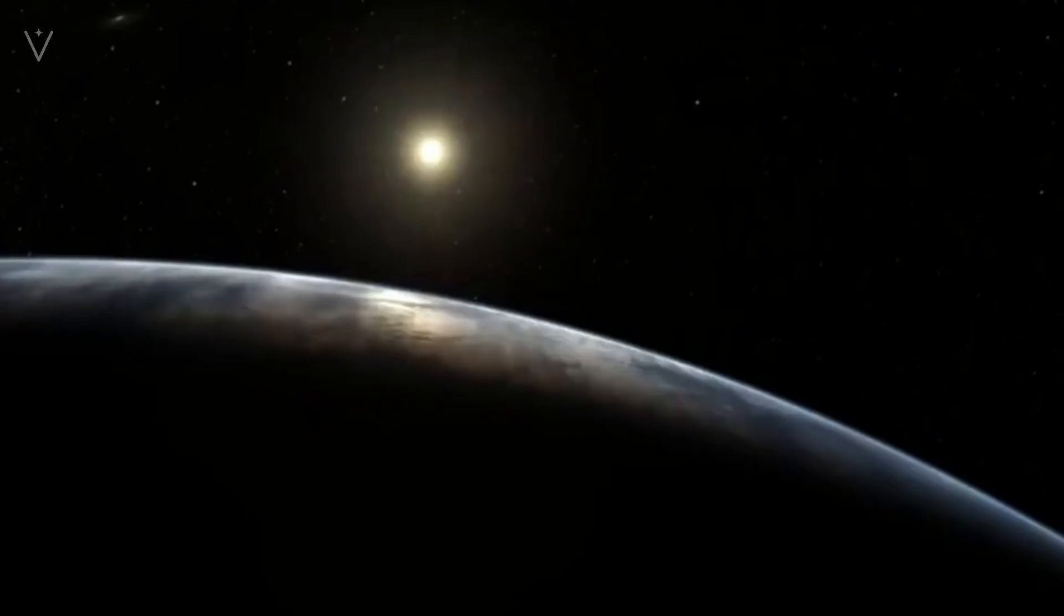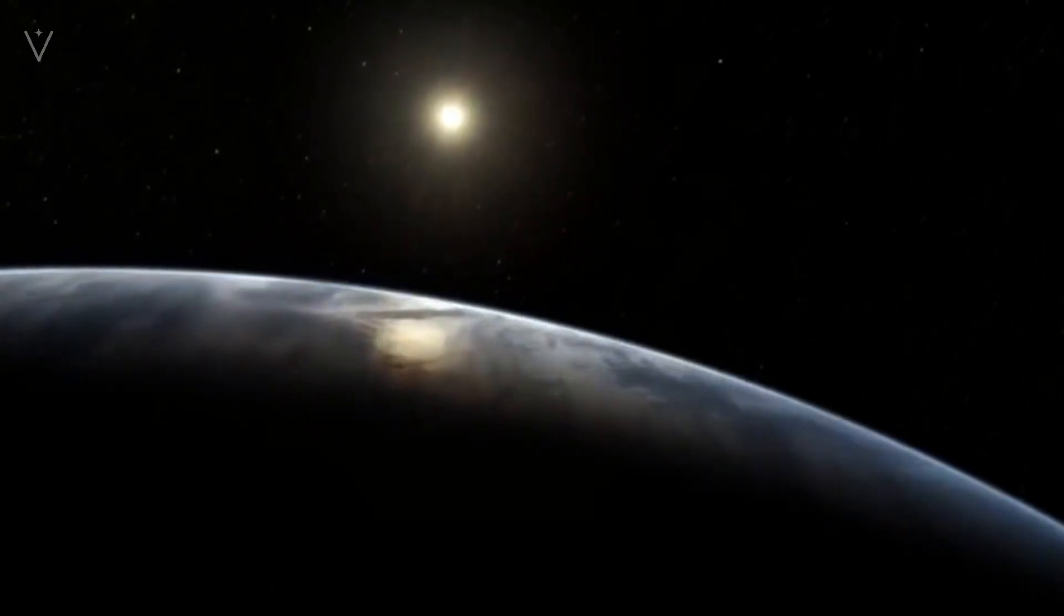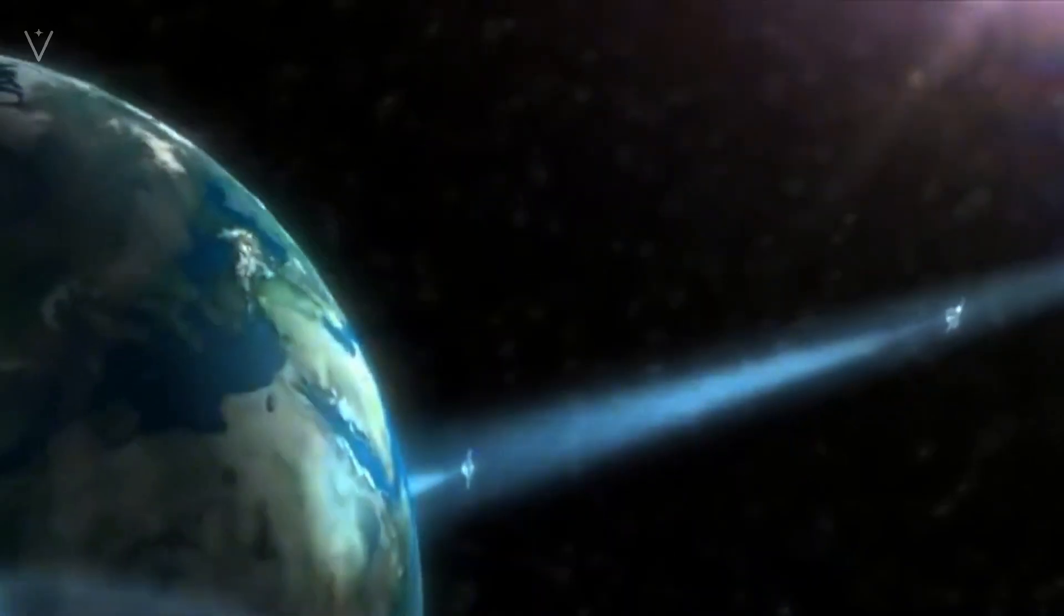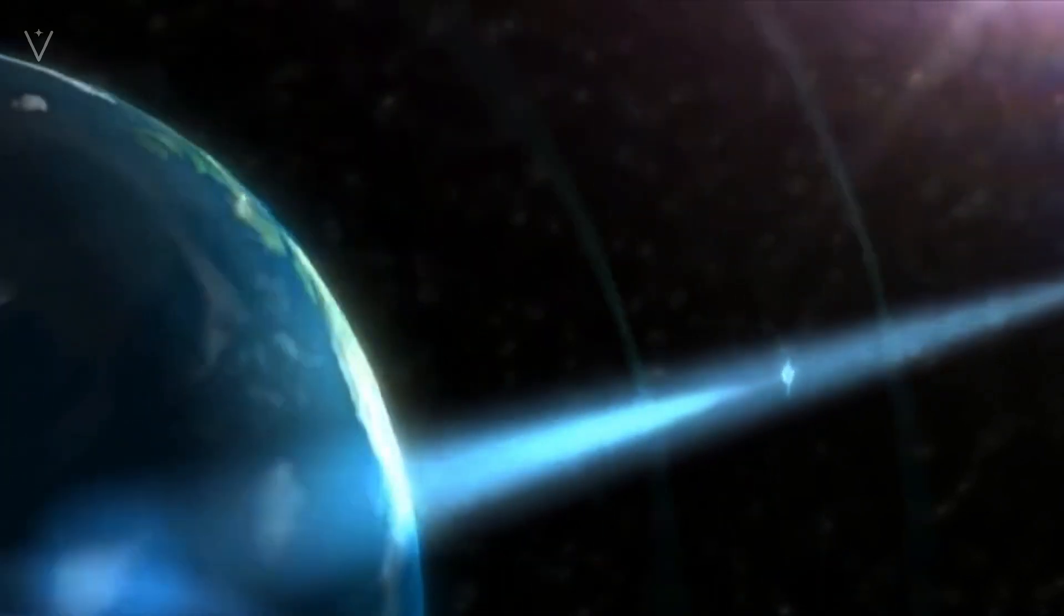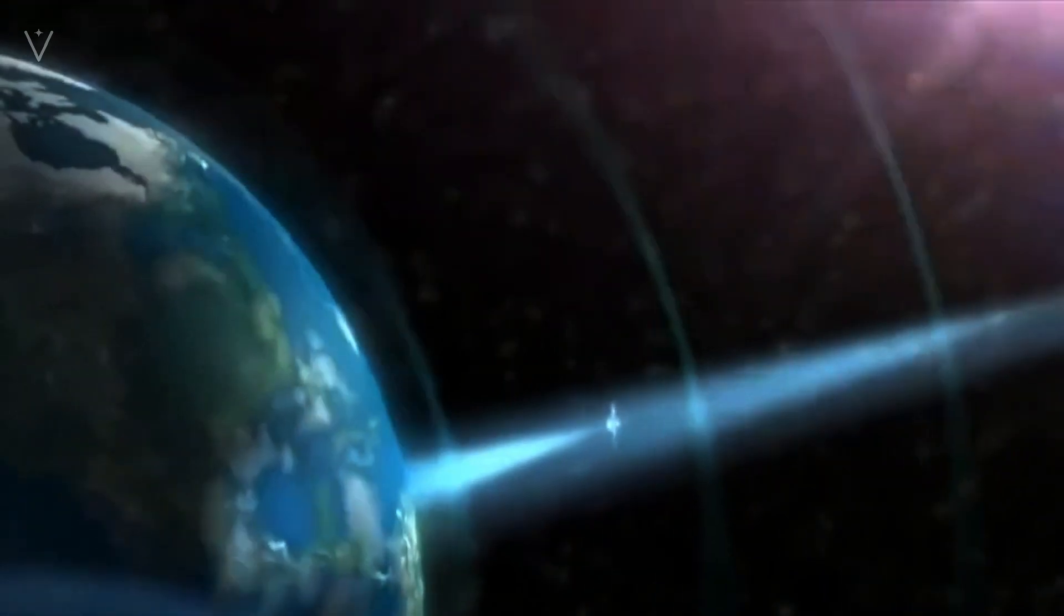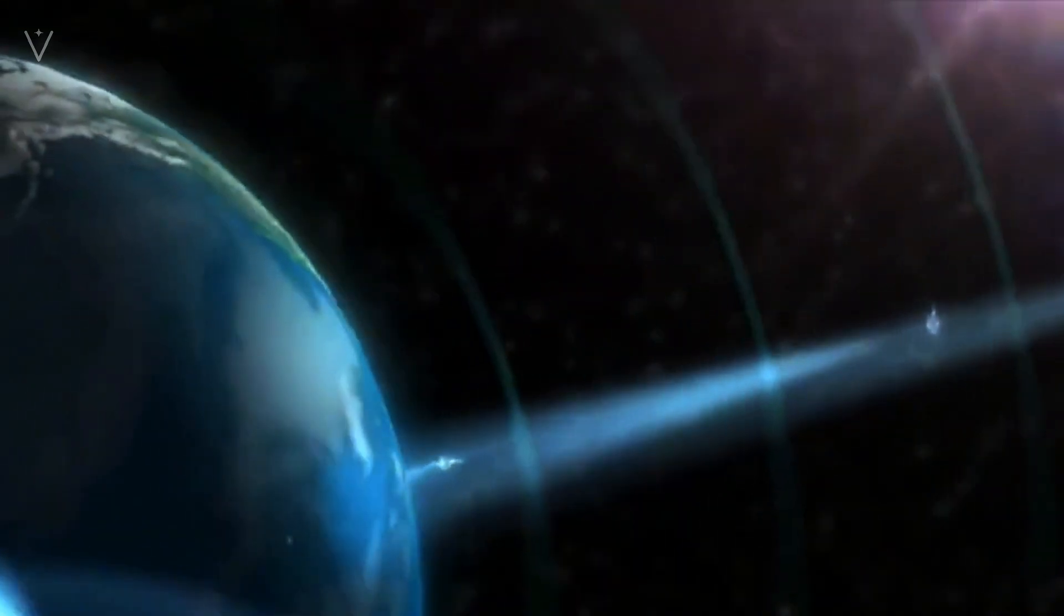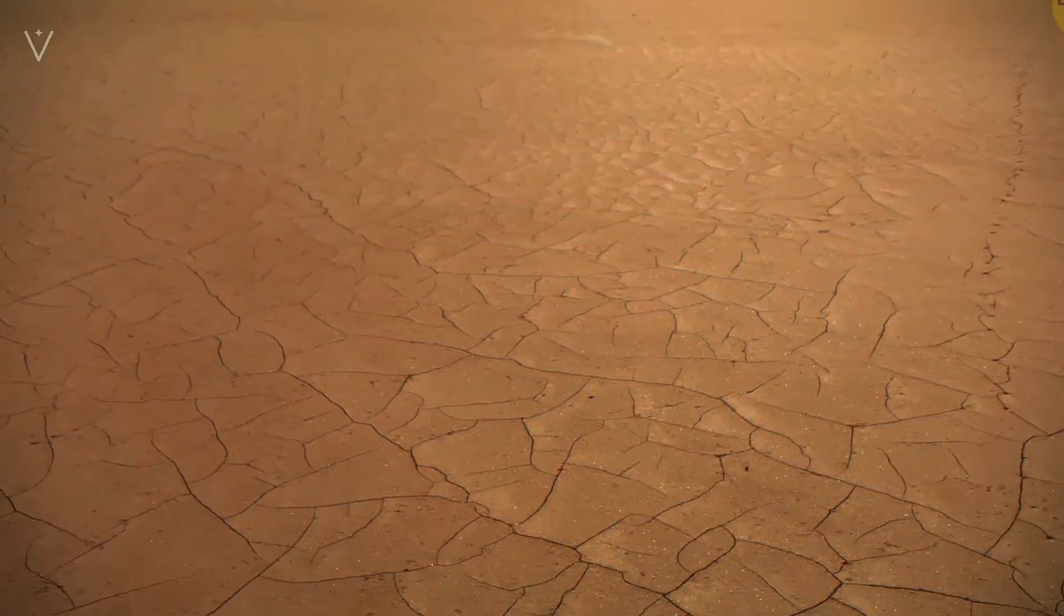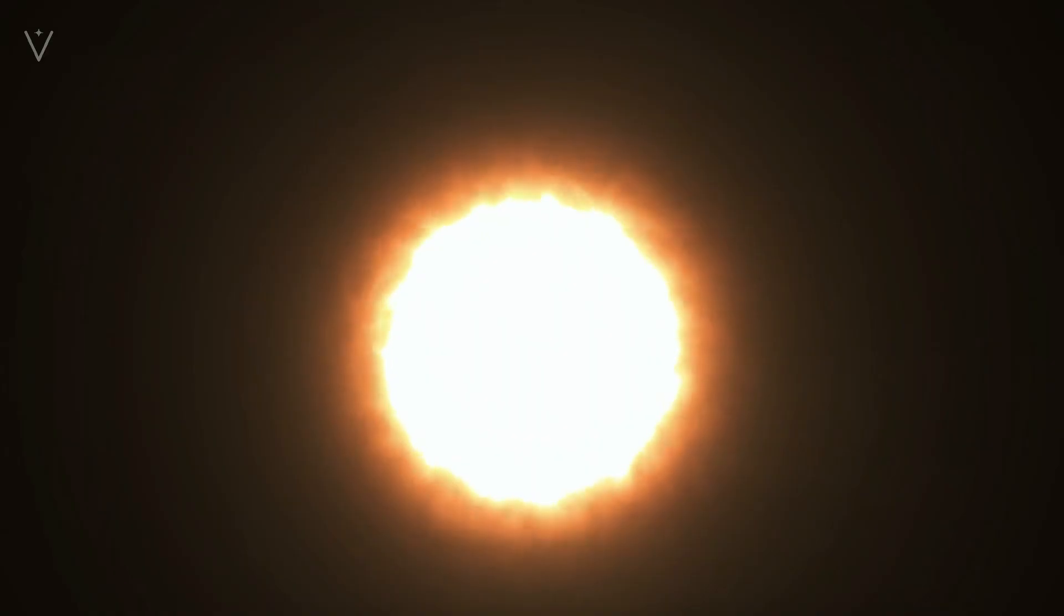This temperature increase would in turn accelerate the rate of nuclear fusion reactions, leading to an exponential increase in energy output. When the Sun's mass increases significantly, its surface temperature will skyrocket, surpassing 10,000 degrees Celsius, and it will emit a dazzling blue-white light. At this juncture, it is crucial to highlight an essential rule in stellar evolution: the larger a star's mass, the faster it consumes its nuclear fuel, leading to a shorter lifespan. Consequently, if the Sun's mass were to increase dramatically due to an influx of water, the new Sun would have a markedly shorter lifespan.